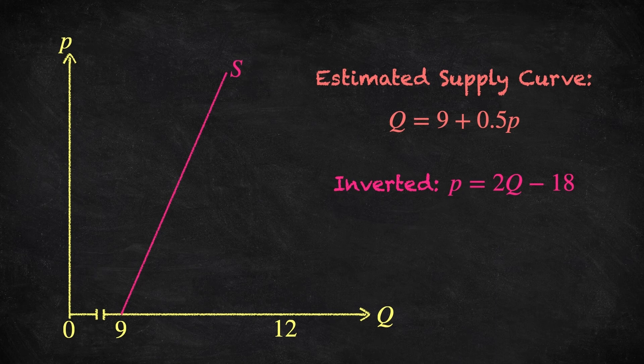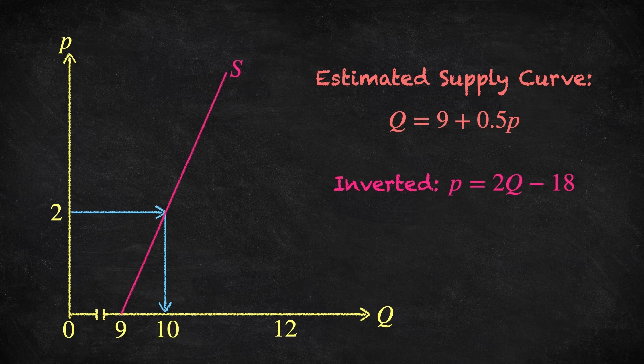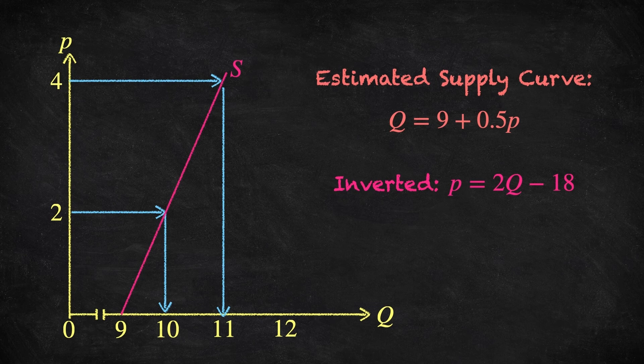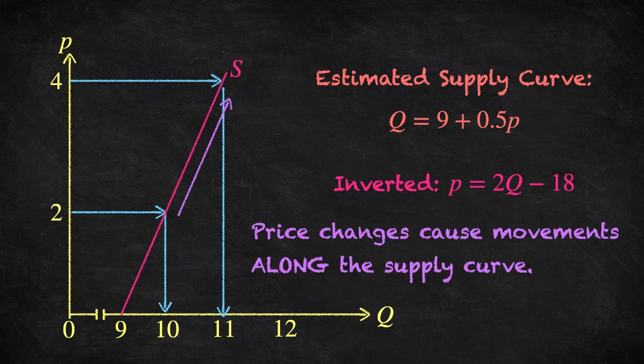To interpret this supply curve, we're going to read across and then down. So if the price is 2, then the quantity supplied to the market is 10. If the price is 4, then the quantity supplied to the market is 11. If the price of the good increases from 2 to 4, the quantity supplied changes, but the supply curve stays exactly where it is. We call this a movement along the supply curve.